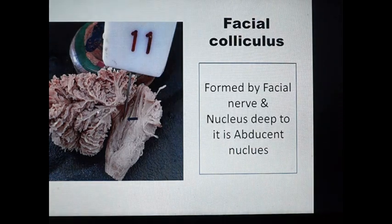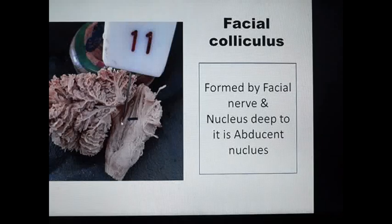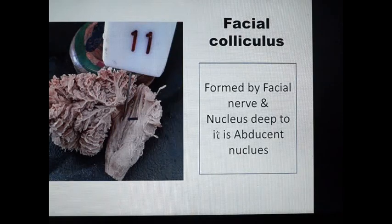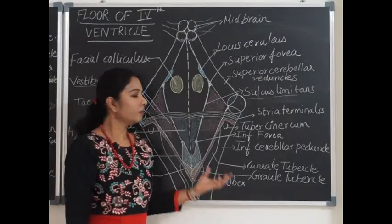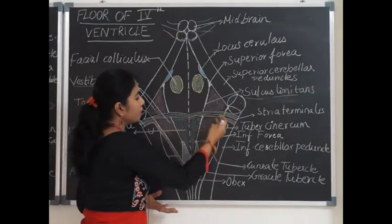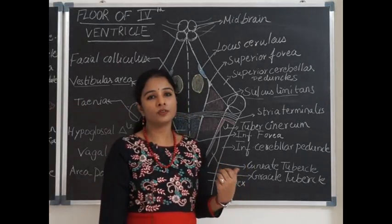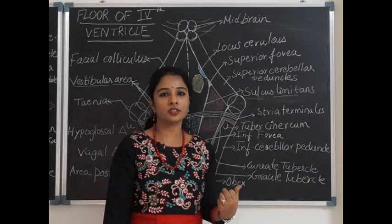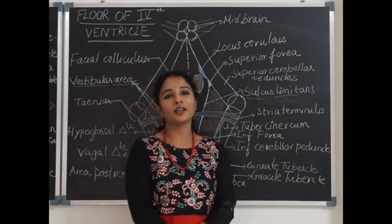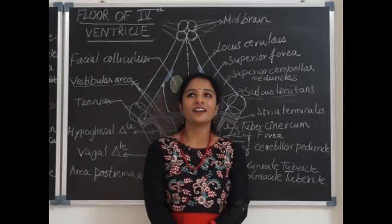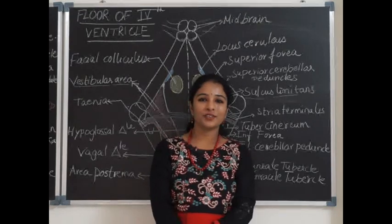Here the pinned spot is identified as the facial colliculus, seen in the upper part of the fourth ventricle floor, formed by the facial nerve. The nucleus deep to the facial colliculus is the abducens nucleus. Many vital centers are present in the floor of the fourth ventricle, which is why studying its anatomy is very essential. Thank you, I hope you liked my session — please like, share, subscribe, and press the bell button for further notifications.